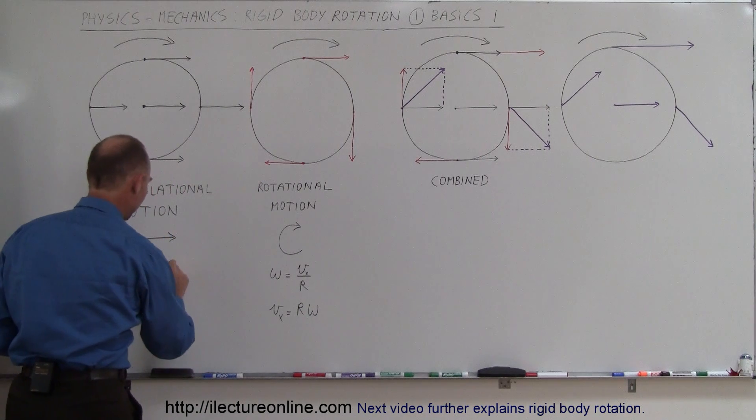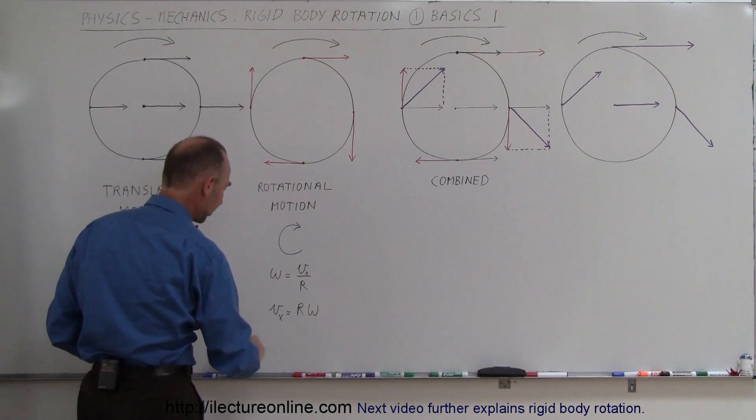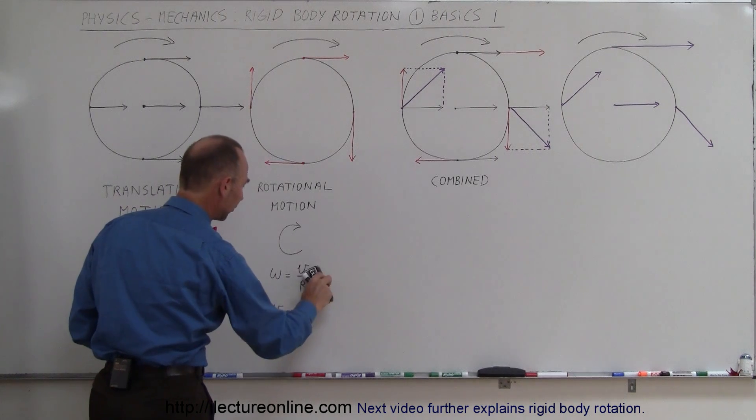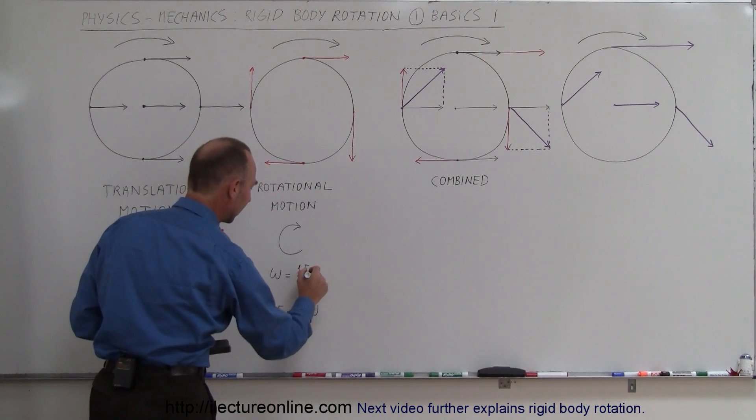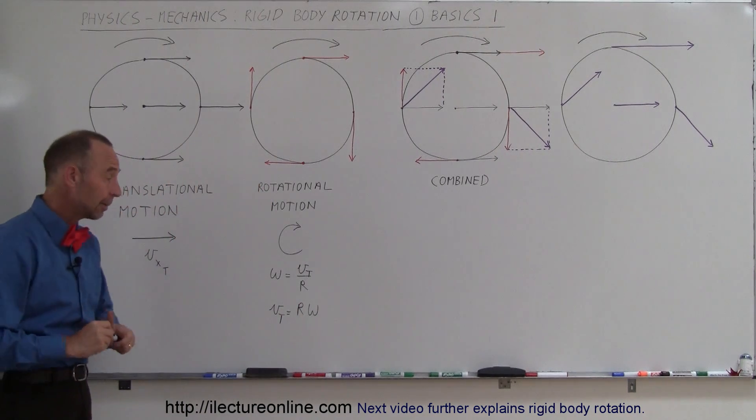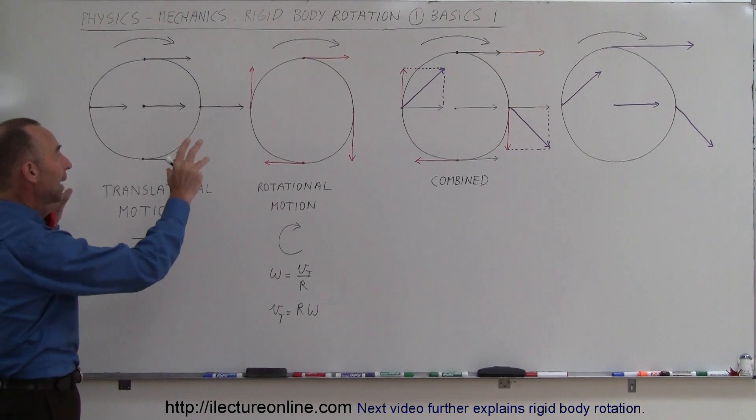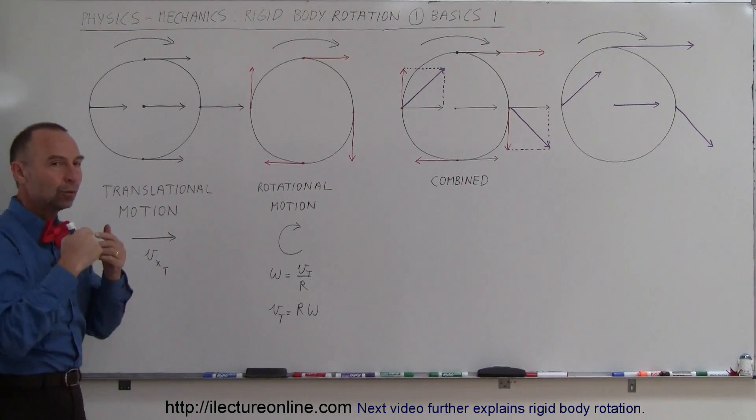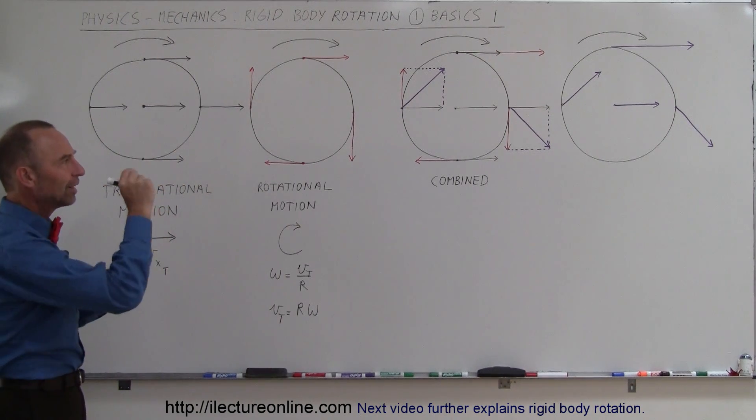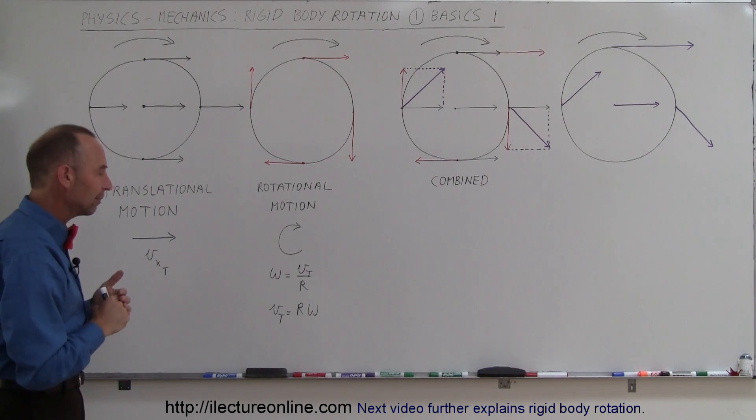So let's call this v sub x translational, and instead of calling the v sub x here, I'm going to call this v tangential, so that way we don't get confused. And so what we need to do then is combine those two velocities to figure out what the velocity is on each particle of the tire as the tire is rotating and moving forward at the same time.